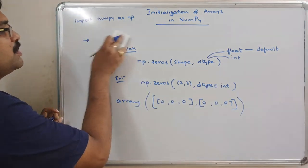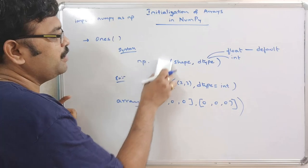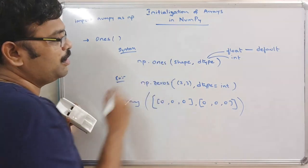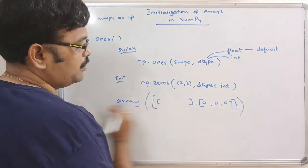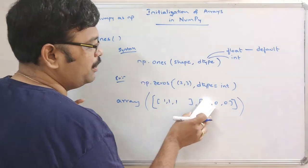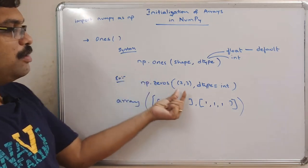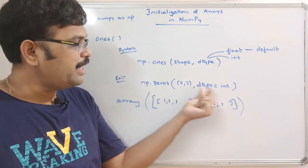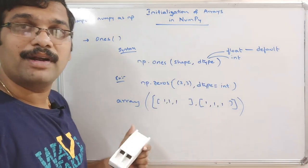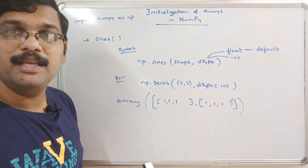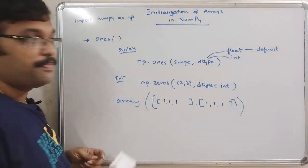Next is the ones function. It works the same way, but all elements will be initialized to ones. The syntax is np.ones(shape, dtype). By default the dtype is float, so you get 1.0 for each element.